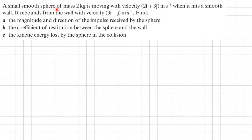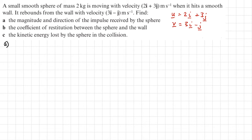Second example: a small smooth sphere of mass 2 kg moves with velocity u = 2i + 3j. When it hits a smooth wall it rebounds with velocity v = 3i − j. Part a asks for the magnitude and direction of the impulse received by the sphere.